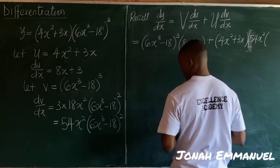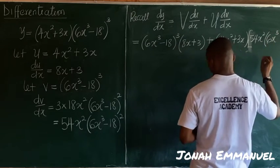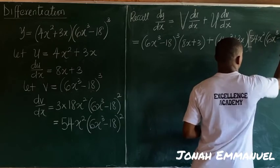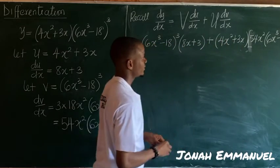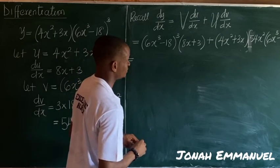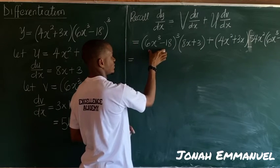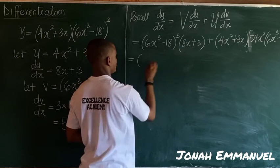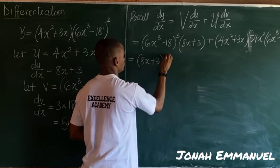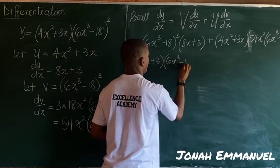Right, so I have this as the value for dv/dx. Next up if I work on this now, I'll take this one first before this. It gives you, this first 8x plus 3 all into all of this, that's 6x cubed minus 18 all cubed.